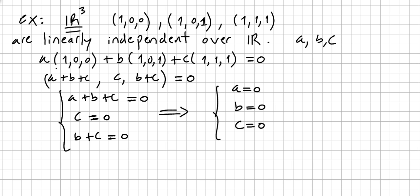So if this is true, a times 1 is a, plus b times 1 is b, plus c times 1 is c. This is 0, this is 0, this is 1. So a plus b plus c, c, b plus c, b plus c would be equal 0.